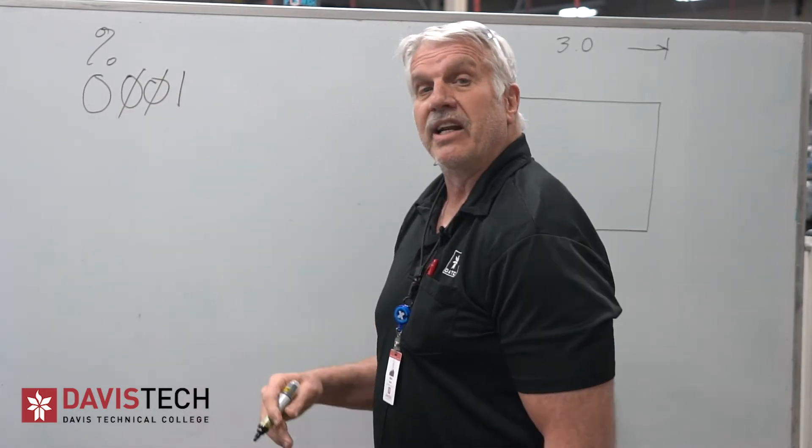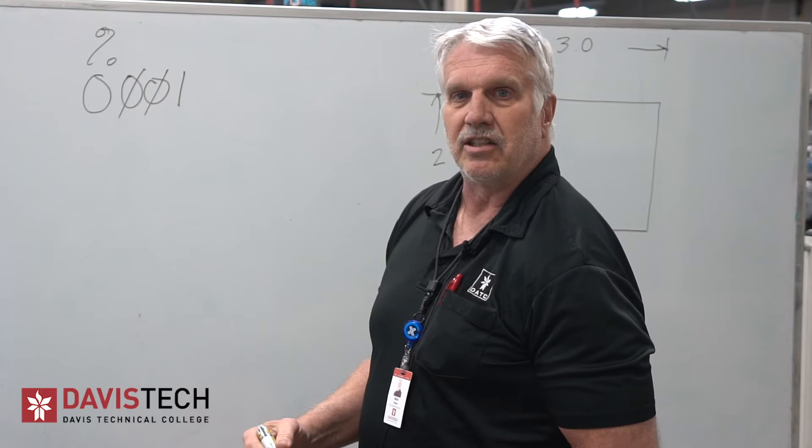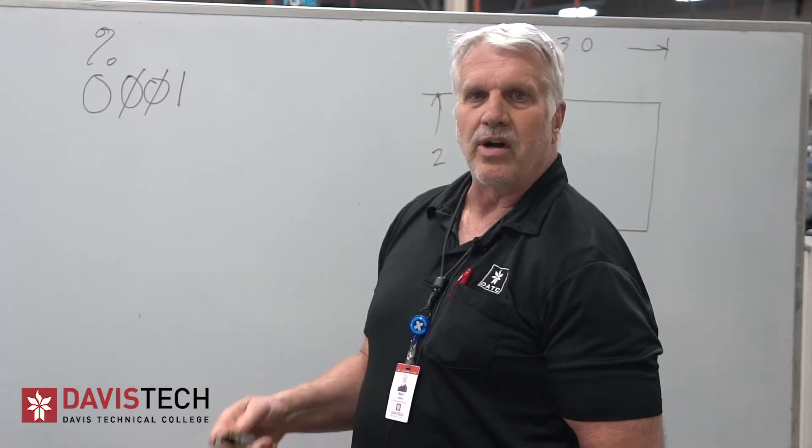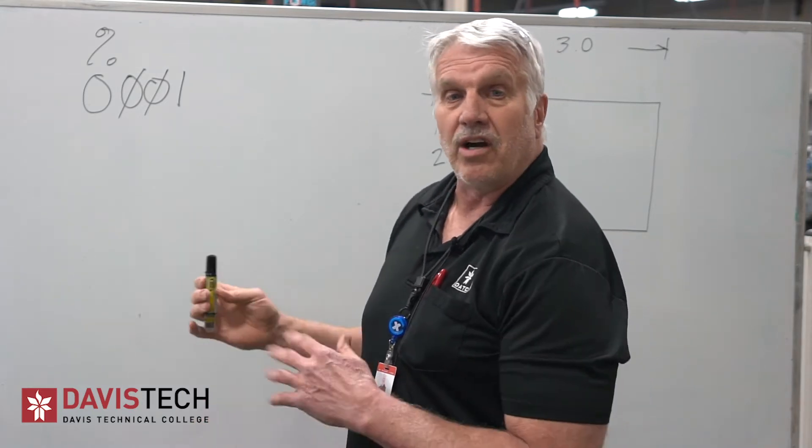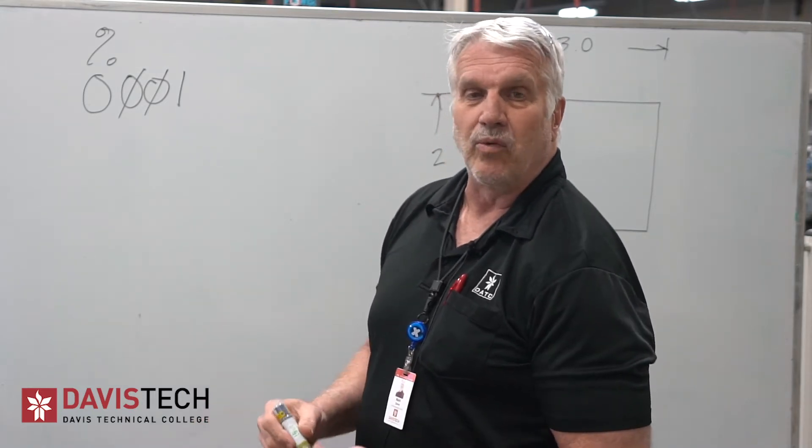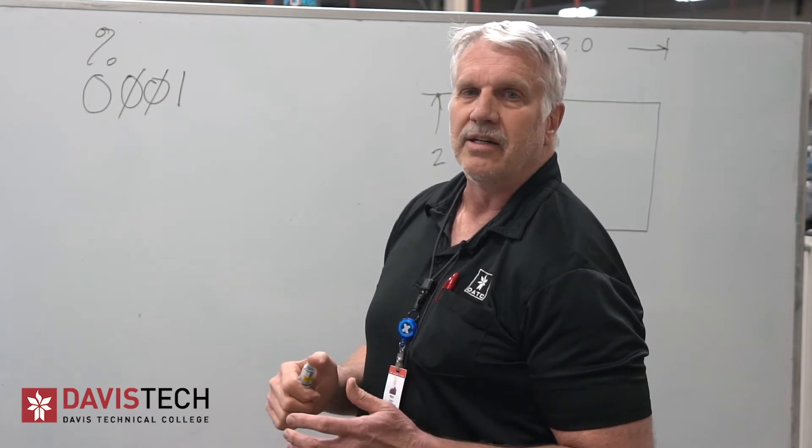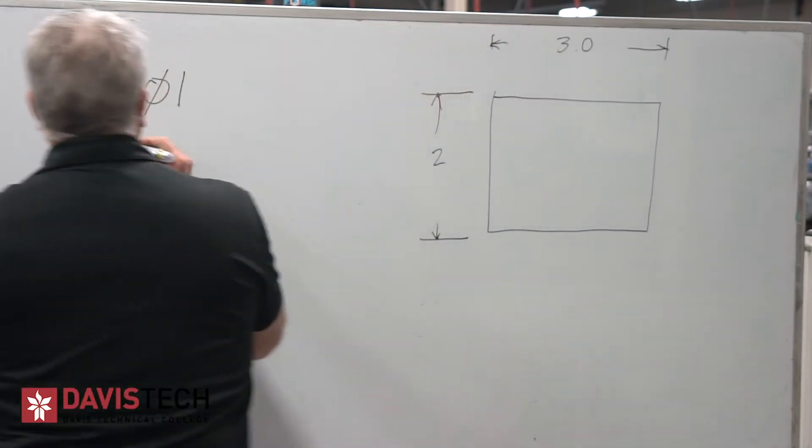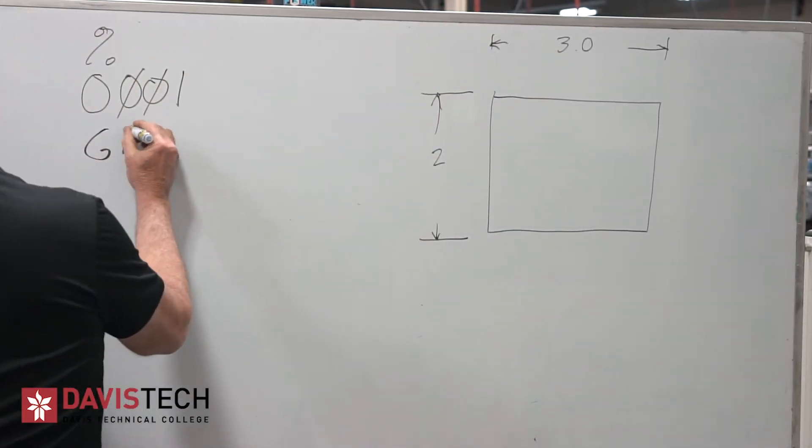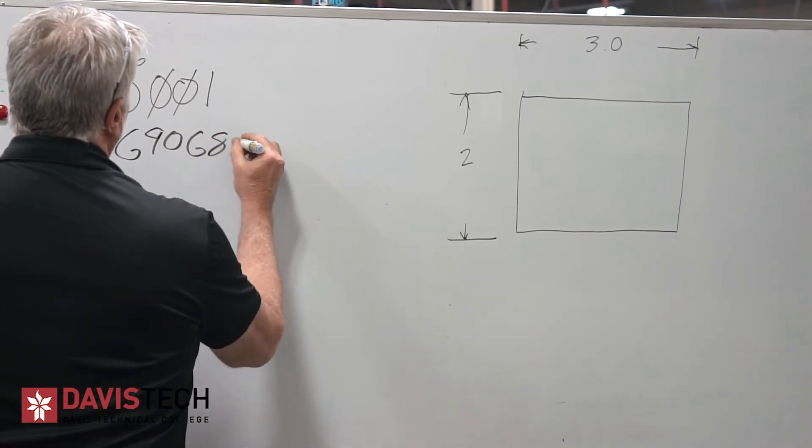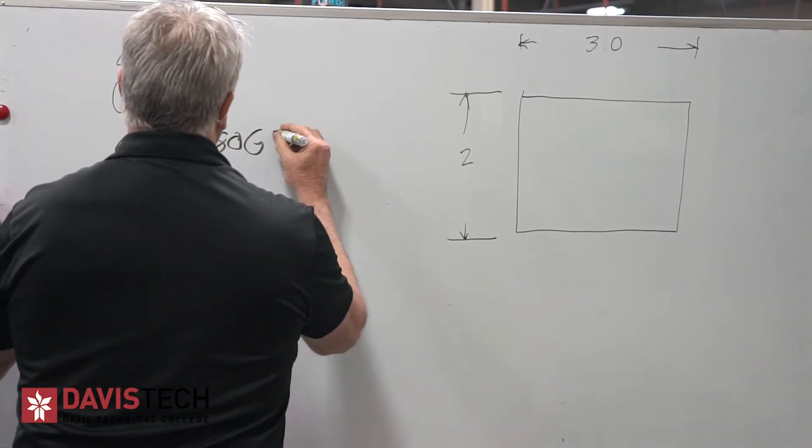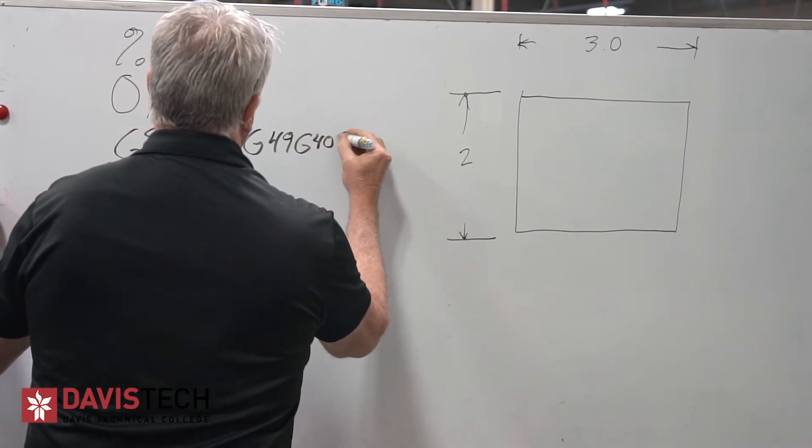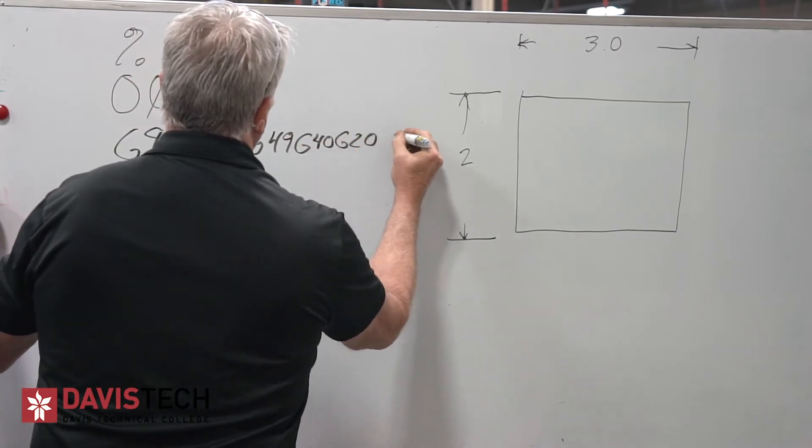Then the very next thing, we're going to put in a safety line. The safety line is just like when you're getting in a car. You never check your tire pressure, your oil pressure, or things of that nature. And when we start our program, what we want to do is we want to make sure that we have everything the way it should be. So we're going to write a G90, make sure it's in absolute mode. G80, G49, G40, G20, and G17.